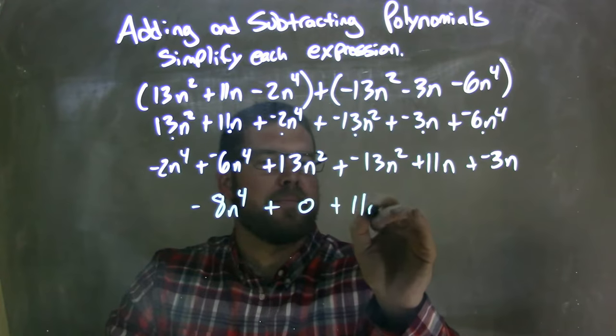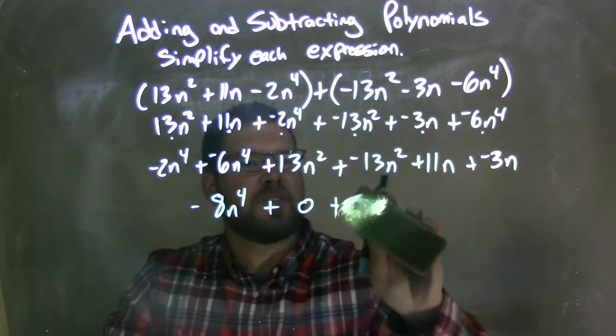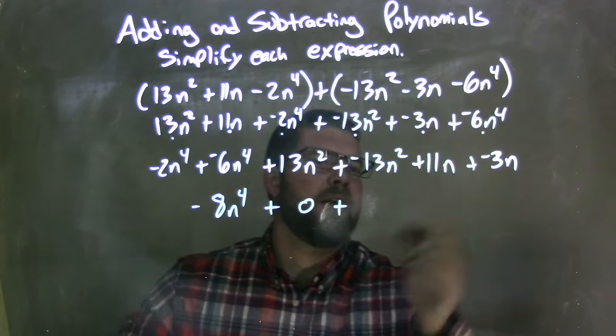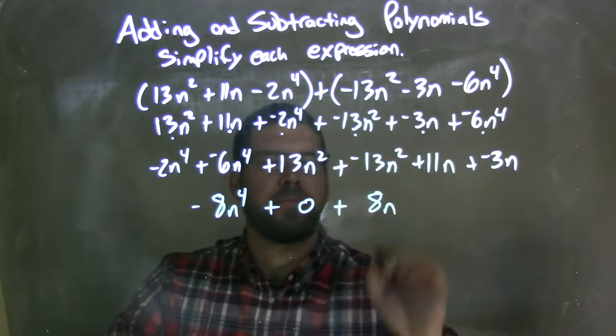Now we have plus 11n. And then adding a negative, sorry, I always do that. Not just plus a negative 11n, we combine it with a negative 3n. So 11n plus a negative 3n comes out to be 8n.